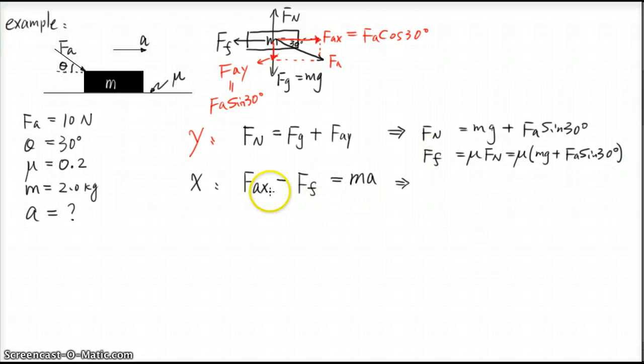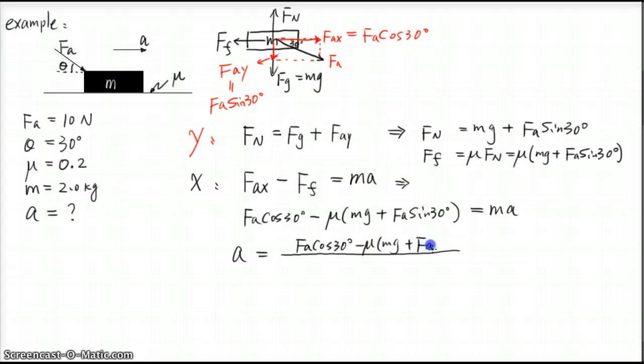So we needed the Ff for the second equation, and now since we already know Ff, the equation is going to be here. So Fax is Fa cos 30 degrees and subtract Ff. So we plug in the Ff into this equation. So we subtract mu times mg plus Fa sine 30 degrees equals Ma. The question is asking for the acceleration, so divide by M on both sides. So A should equal Fa cos 30 degrees minus mu times mg plus Fa sine 30 divided by M.